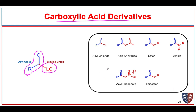The carboxylic acid derivatives we're going to be most interested in are the acyl chloride, acid anhydride, ester, and amides. A couple of other important ones are acyl phosphates, which are biologically important, and thioesters, which we'll run across from time to time, although we won't delve into them in great detail in this module.